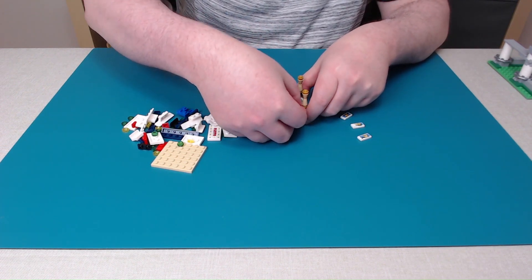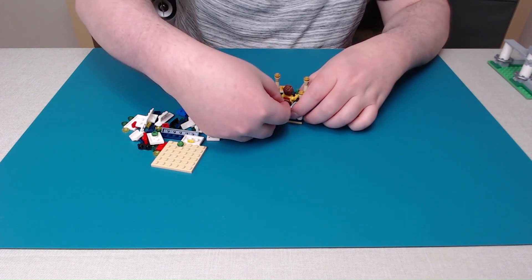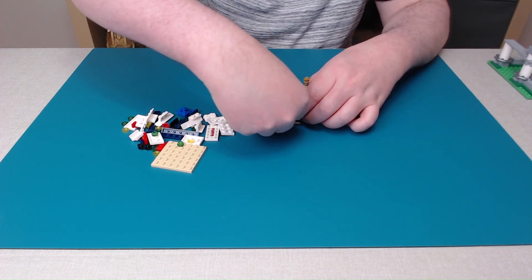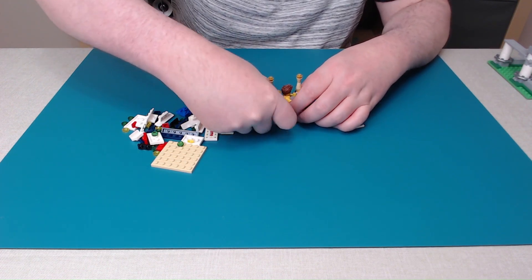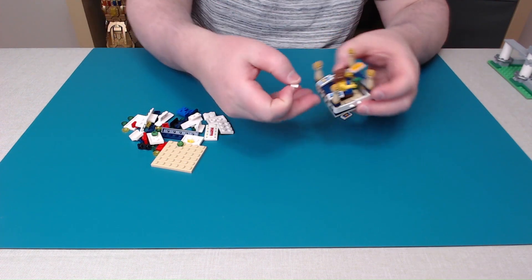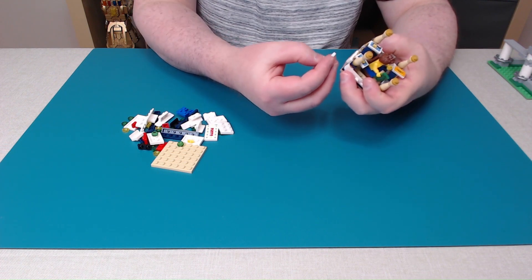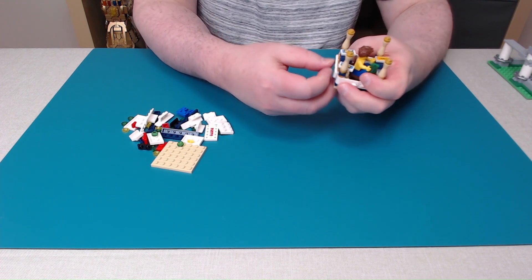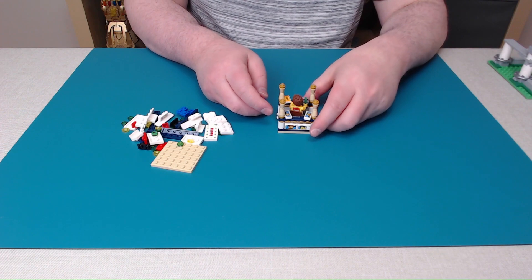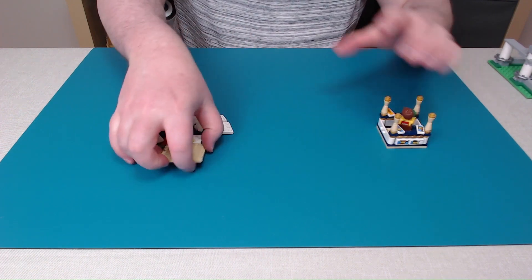So a couple photos go around on the counter and then a couple can go on the front here. That's the lower half. Now for the upper half.